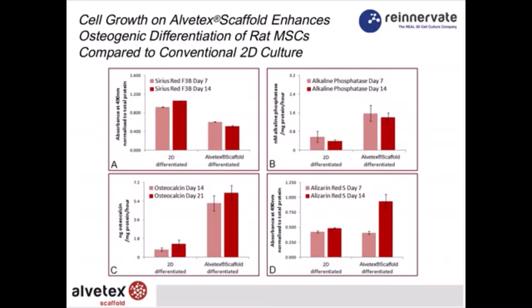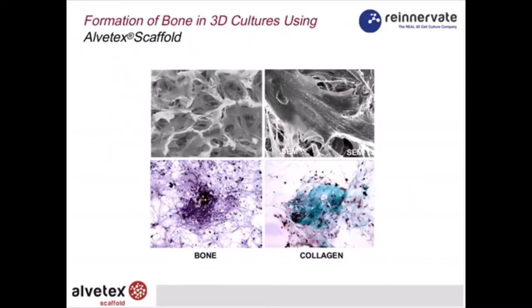I'd like to draw attention at this time to the application notes which describe in full these slides. You can download the application notes for the MSC data from our website. The next slide shows at high magnification how mesenchymal stem cells are growing in an Alvitex scaffold. The top two images show low and high power micrographs from a scanning electron microscope — SEM images — showing the cells clearly inside the scaffold.